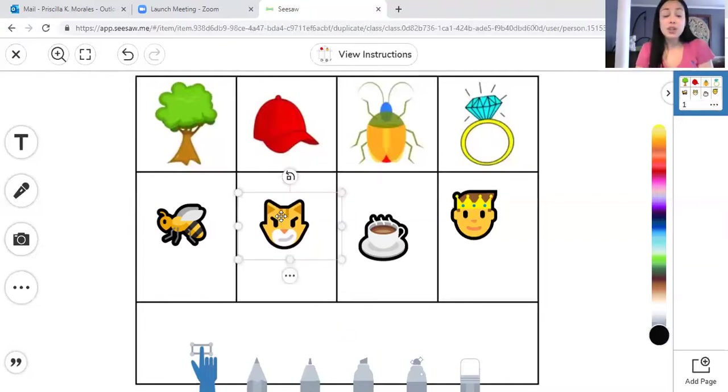When you are all done, you can record yourself saying the rhyming words. So you want to click the microphone, and then you can say: tree, bee, hat, cat, bug, mug, ring, king. And then you can press done. I can't wait to listen to you say the rhyming words.